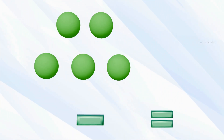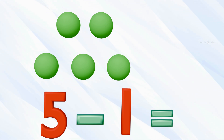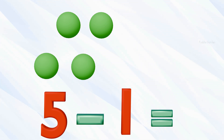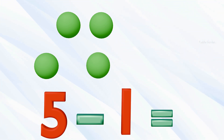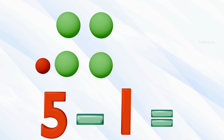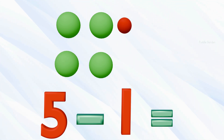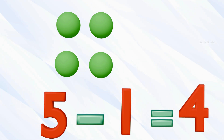We have five spheres and we want to take away one of those. Five and we want to take away one — we're left with how many? One, two, three, four. Five subtract one equals four.